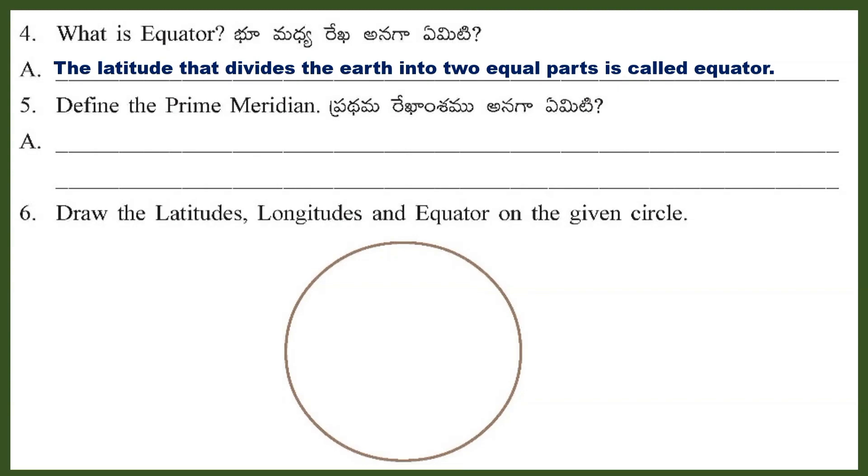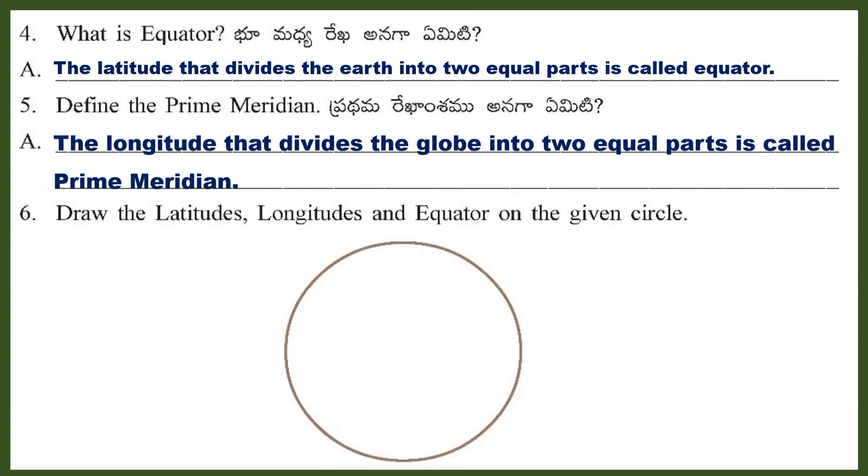Question 5: Define the prime meridian. Answer: The longitude that divides the globe into two equal parts is called prime meridian.